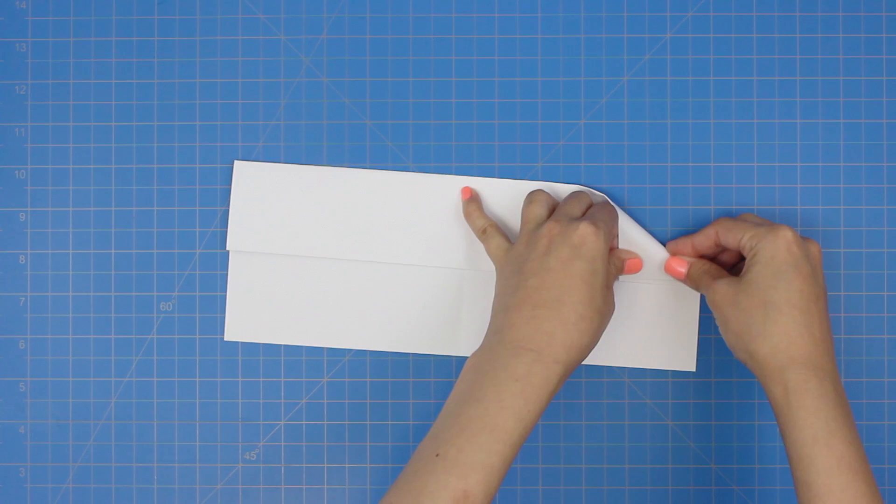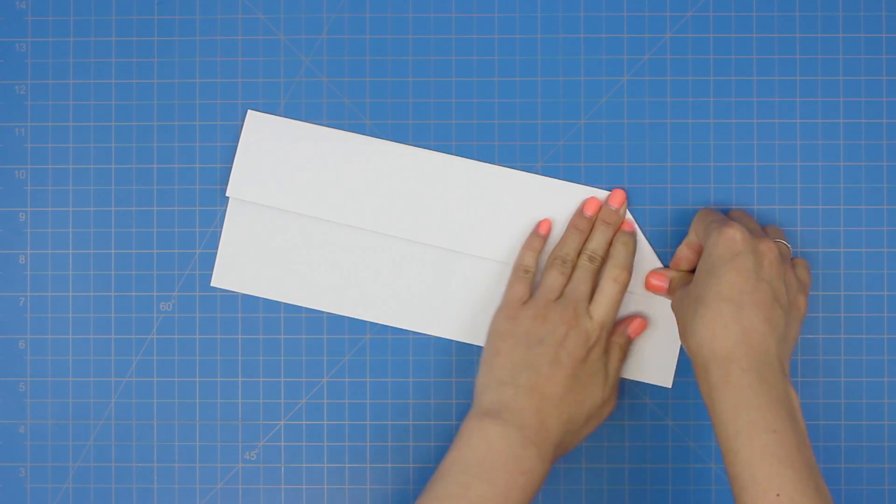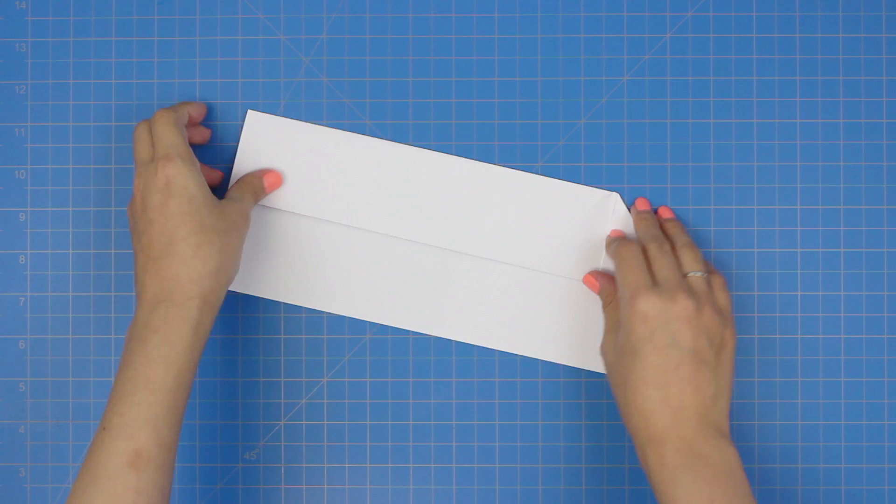Fold the top right corner down along the center line, like this, and then repeat with the other corner.